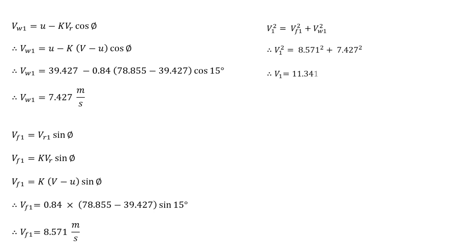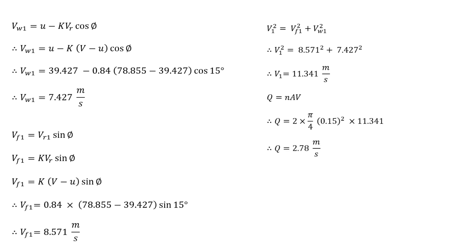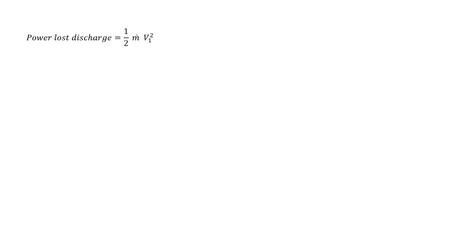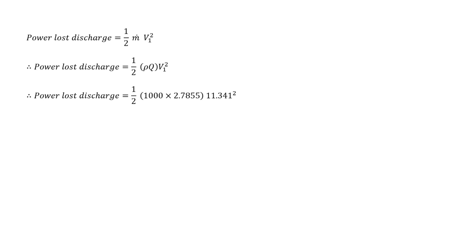Now v1 squared equals vf1 squared plus vw1 squared, so we can easily get the value of v1, which comes out as 11.341 meters per second. Discharge Q equals number of jets times area of jet times jet velocity: Q equals 2 times (pi/4)*D² where D is 0.15 m, giving Q equal to 2.7855 cubic meters per second. Power lost at discharge equals one half times m-dot times v1 squared, where m-dot equals rho times Q, that is 1000 times 2.7855, with v1 as 11.341 meters per second. In this way we can solve examples on the Pelton wheel.